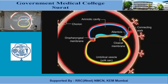This is the trophoblast cavity and this is the allantois. What is the allantois? The allantois is a diverticulum from the yolk sac into the tail end of the developing embryo. So the allantois is a diverticulum of the umbilical vesicle that has protruded into the connecting stalk.